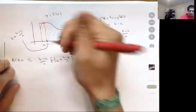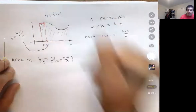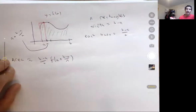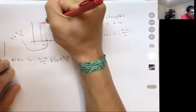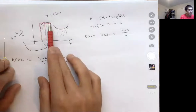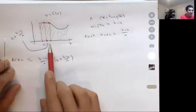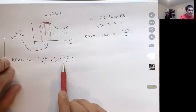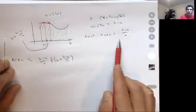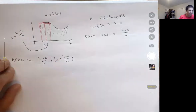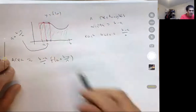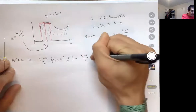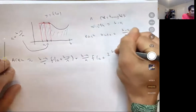For the second rectangle, I move over one more base width and again use the height of the function at the right-hand endpoint. To find this endpoint, I take the previous x value — a plus b minus a over n — and move over by one more base width, b minus a over n. So this x value is a plus two times b minus a over n. The area of the second rectangle is (b minus a over n) times f of (a plus 2 times b minus a over n).